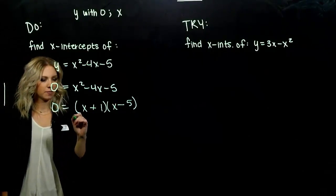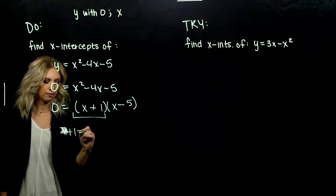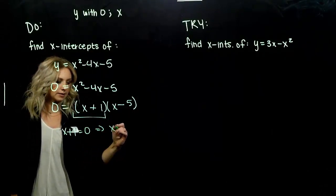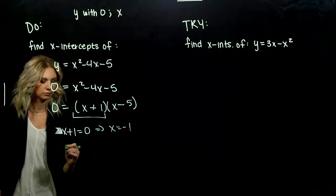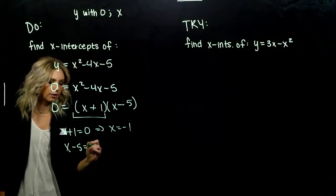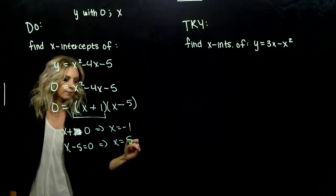So what does that tell me for my x-values? If the first chunk is equal to 0, that implies x is negative 1. If the second chunk is equal to 0, that implies x is 5.